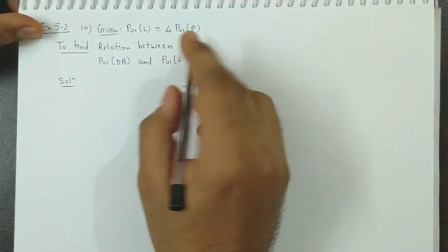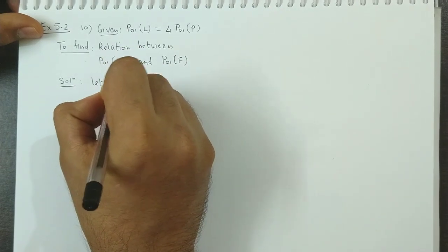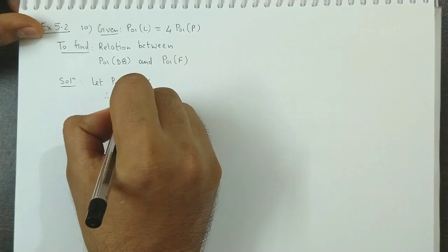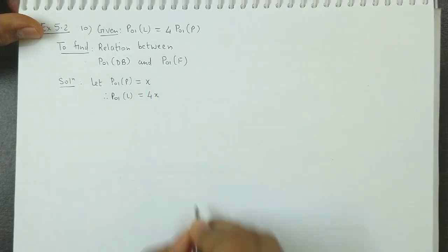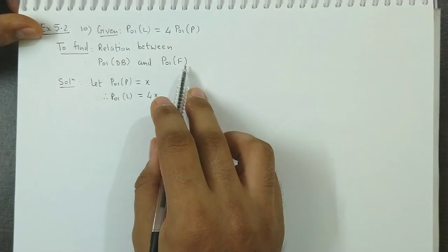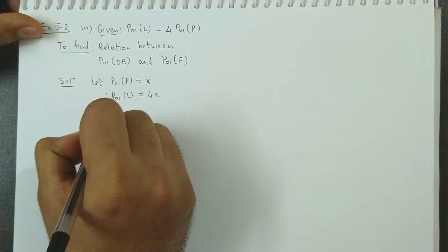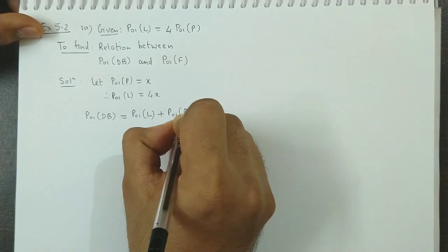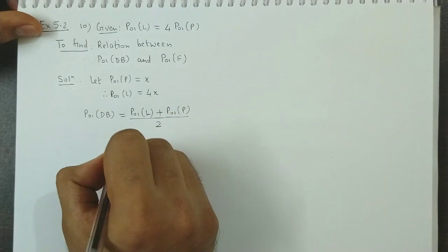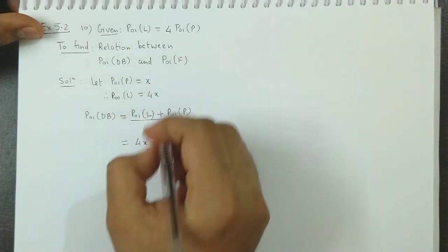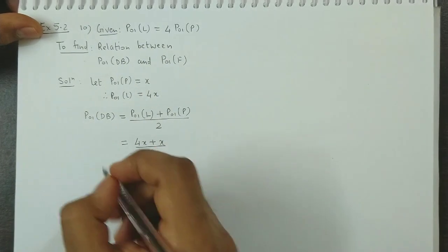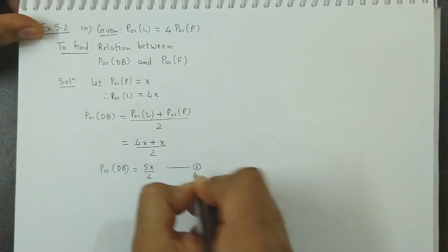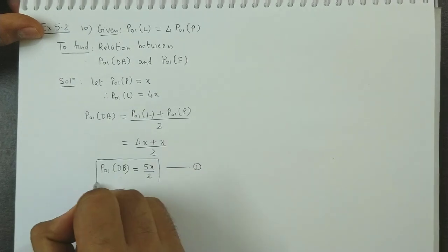We assume Paasche's index is x, so Laspeyres' index is 4x. Now we have to find the relation for Dorbisch-Bowley's index. We know that Dorbisch-Bowley's index is the average of Laspeyres' index and Paasche's index, so it is (P01L + P01P) / 2. Substituting, we get (4x + x) / 2 = 5x/2. We call this Equation 1.